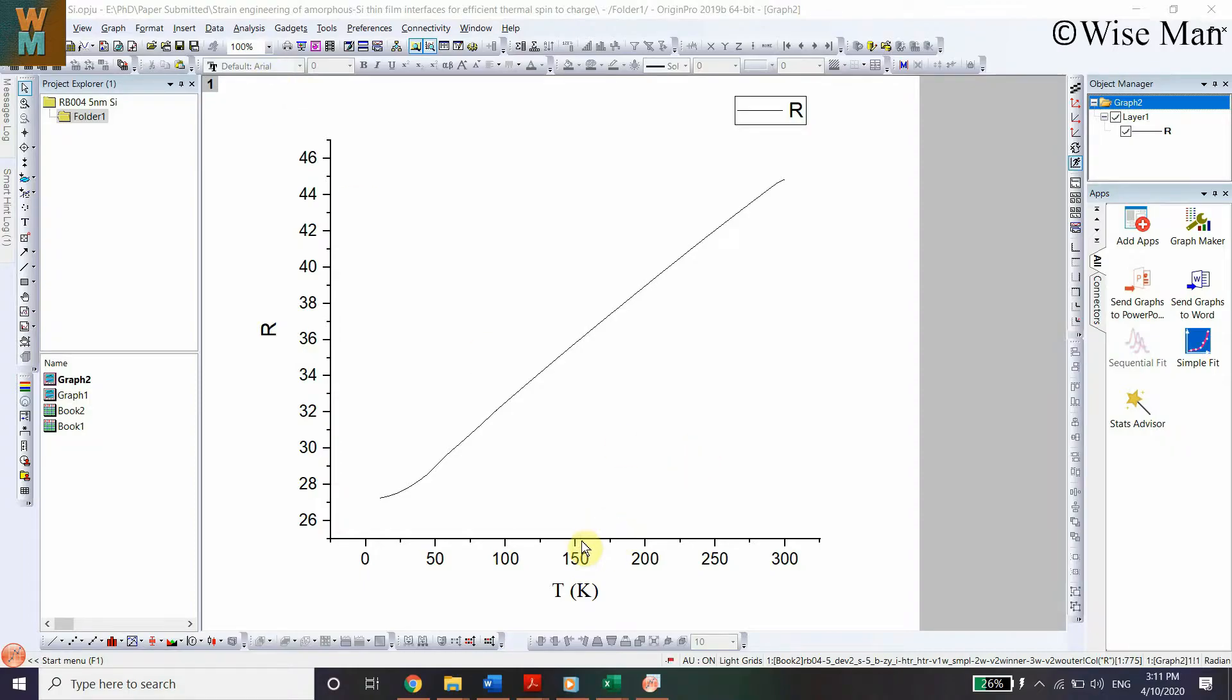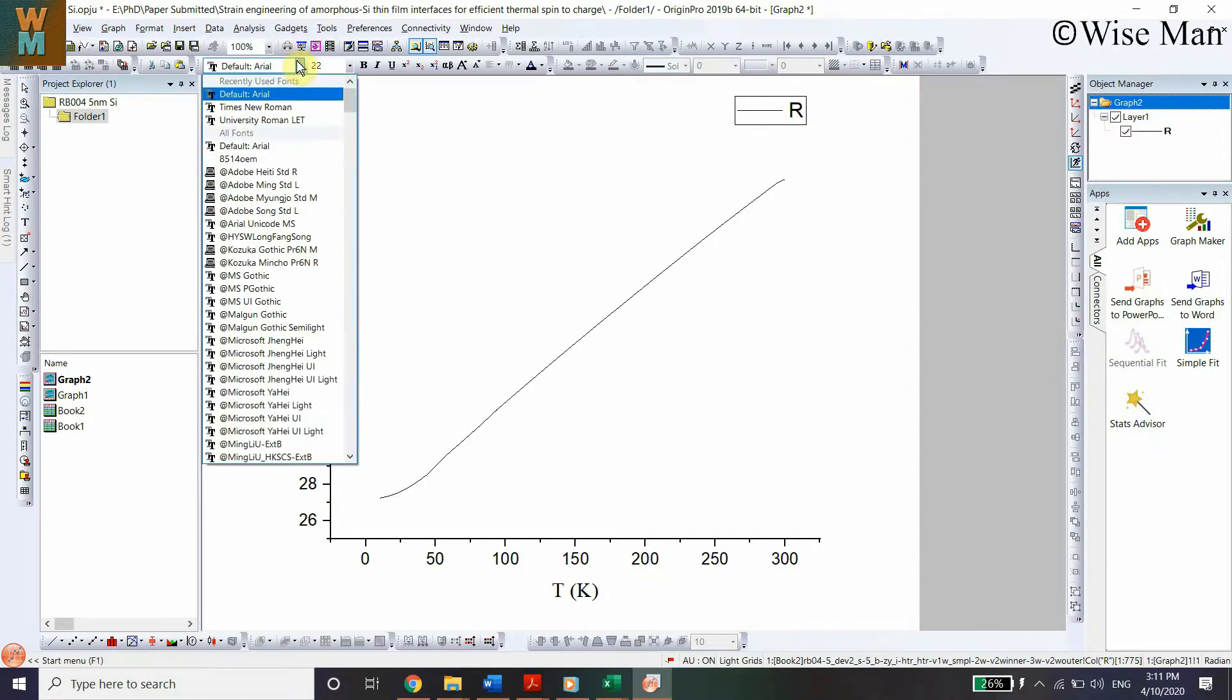Generally what happens is that many published papers and presentations require graphs with Times New Roman font style. So as you can see, if I click on this it's Times New Roman. That means if I want to write something I need to write it and then change it to Times New Roman.